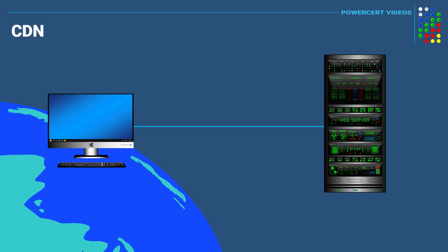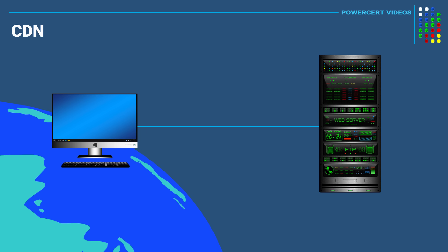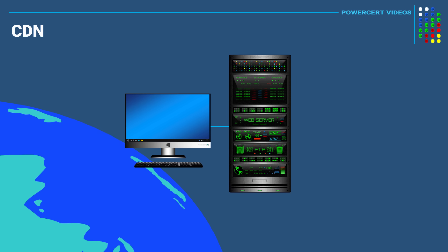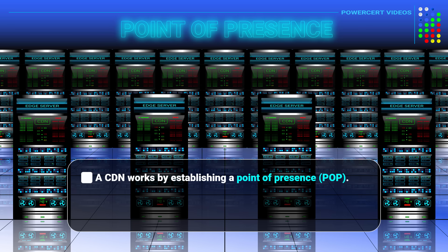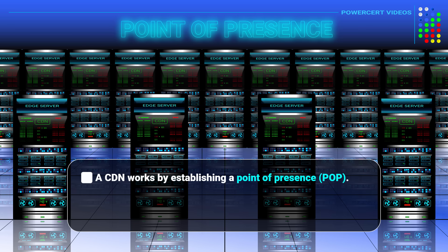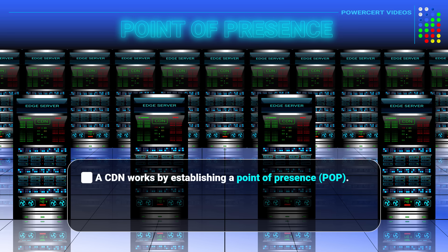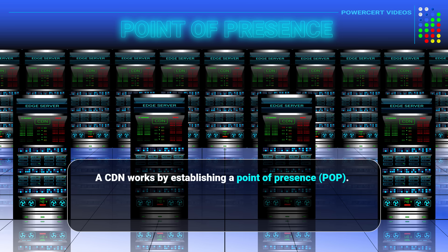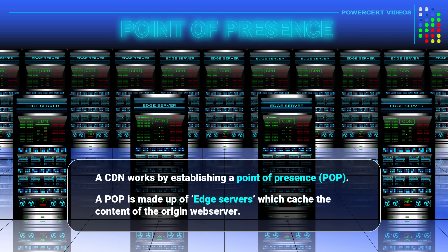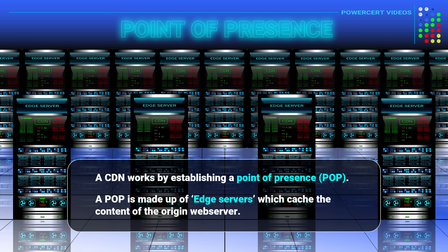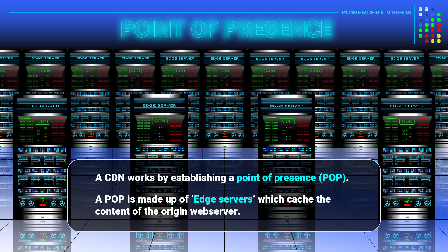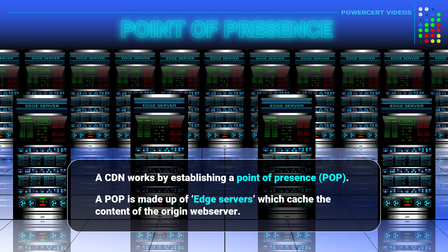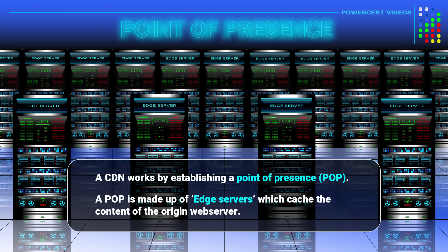So this is where a CDN comes in. A CDN was created to make websites faster by eliminating the distance between the user and the origin web server. A CDN works by establishing what's called a POP, or point of presence. These POPs are placed in different geographical areas all over the world and are made up of servers called edge servers. These edge servers cache the content of the origin web server to deliver the website data to users faster by bringing the website data closer to the users.